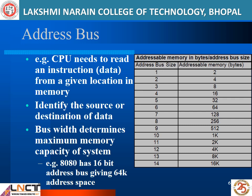The width of the address bus — that is, the number of wires it contains — determines how many unique memory locations the bus can identify. For example, if the size of the address bus is 1 bit, it can address 2 memory locations. If the address bus is 4 bits, it can address 16 different memory locations. Similarly, if the address bus is 16 bits, it can address 64K of address space.